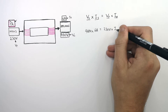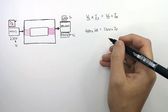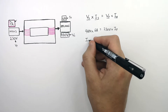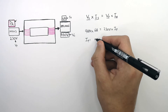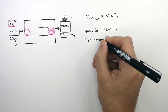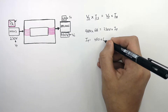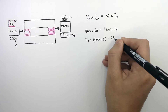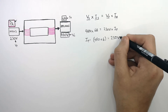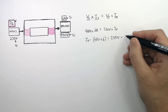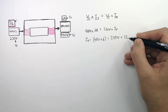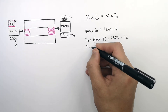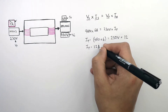We rearrange the equation: IP equals 460 volts times 6 amps divided by 230 volts. That gives us 12 amps. The current in the primary coil is 12 amps.